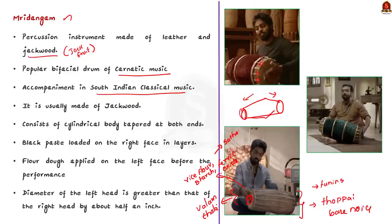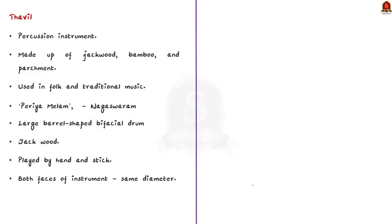This black tuning paste is also known as Sattam. This black disc gives the Mridangam its distinctive metallic timbre. Note here that while playing the instrument, the Mridangam artist has his right hand over the smaller face and his left hand over the larger face. And before the instrument is played, very fine flour powder is applied on the left face. This is all regarding Mridangam. Now coming to Tawil.